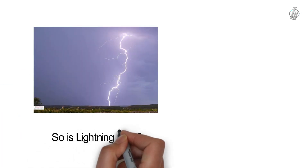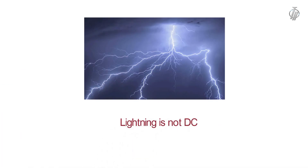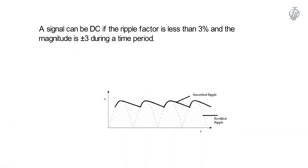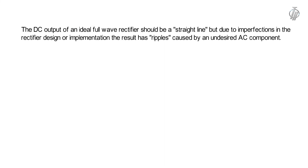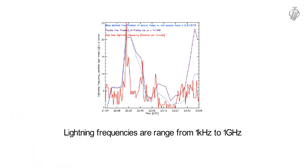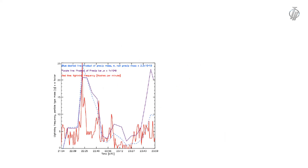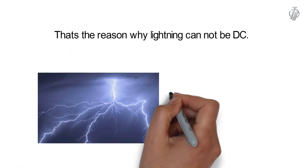So then many will say lightning is DC. That is also wrong — lightning is not DC either. Because a signal can only be called DC when its ripple factor is less than 3%. But the ripple factor of lightning is much more than 3%. Ripple factor refers to the amount of AC component remaining in a DC signal when DC is being produced. Lightning's frequency ranges from 1 kHz to 1 GHz or even more. But DC frequency is 0. So lightning cannot be DC power.